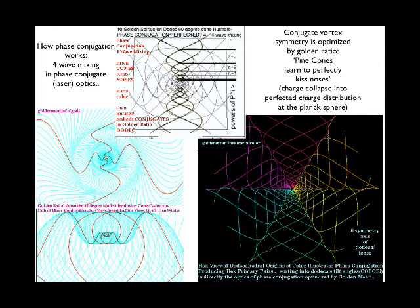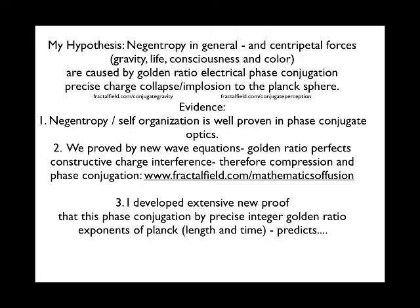We call it pine cones kissing noses, but now we've put dimensions to the actual wave shape and extended the concept of negentropy to broader spectrum, not just optical but magnetic and in plasma. The essential hypothesis is that negentropy, self-organization in general, and centripetal forces like gravity, life, consciousness, and color are caused by golden ratio electrical phase conjugation, which is precise charge collapse to the dimension of the Planck sphere.